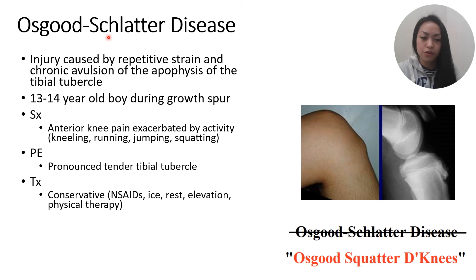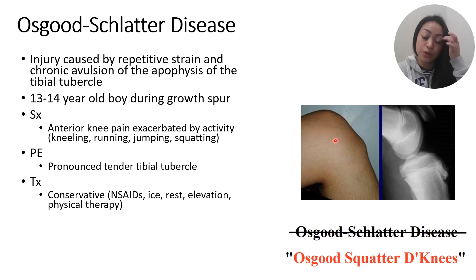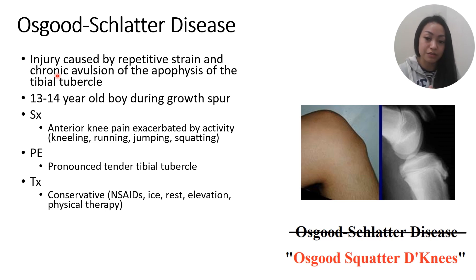Symptoms of Osgood-Schlatter disease include anterior knee pain — front-of-the-knee pain worsened by activity like jumping, kicking, running, and squatting. On physical examination, you'll see and palpate a pronounced, tender tibial tubercle. On X-ray, you can see the formation of that lump. Treatment is conservative since this is a self-limiting disease — when the growth plate ossifies, the pain goes away. Treatment is just rest, ice, physical therapy, and NSAIDs if needed.